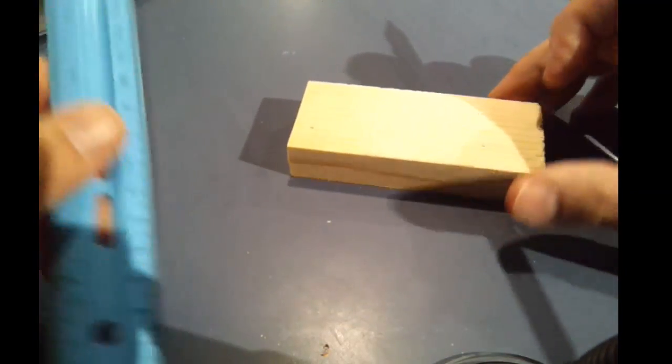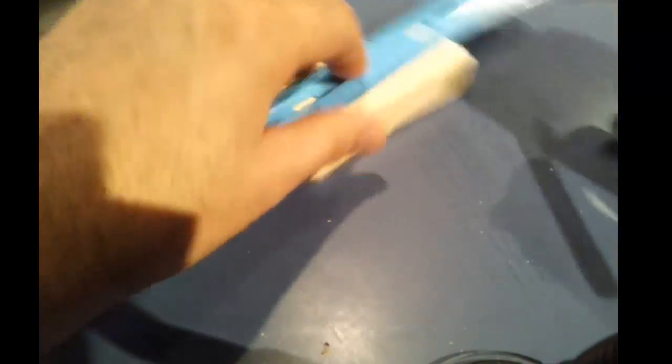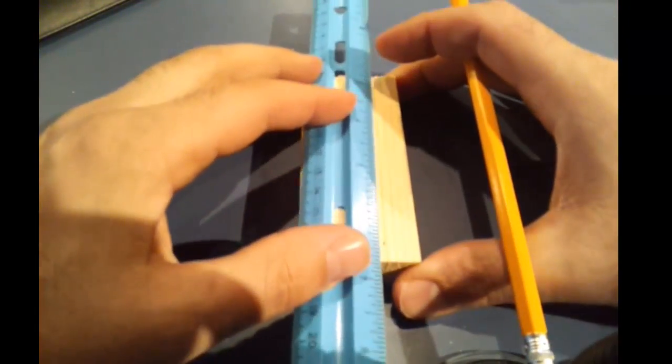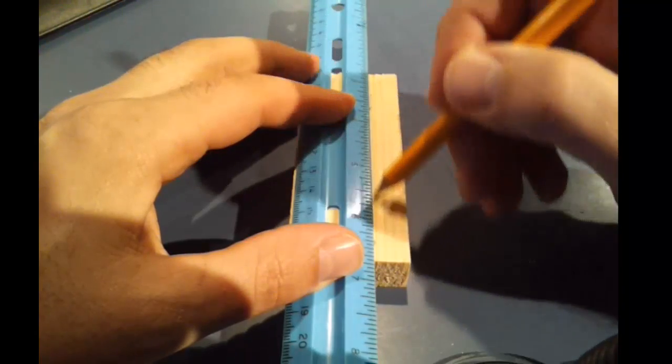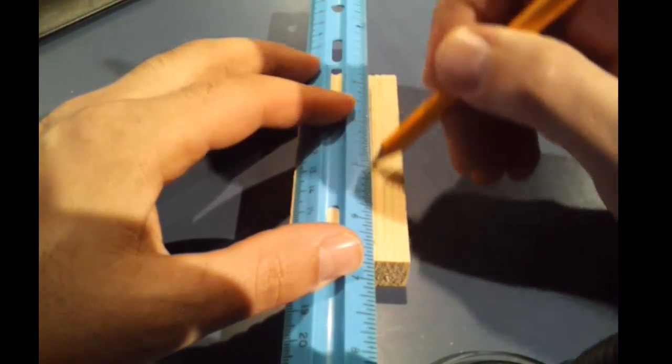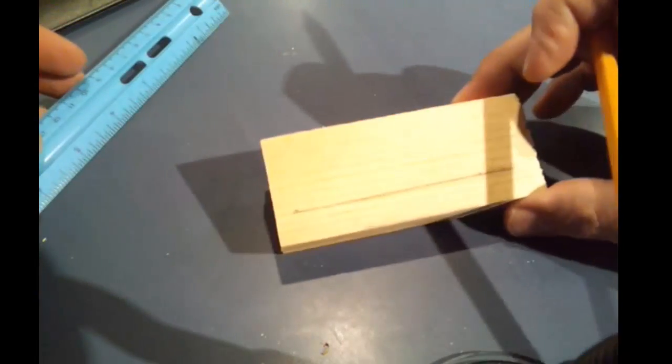Now I have two marks. I'm going to take my ruler and use it as a straight edge and draw a light line to connect those. I'm going to draw a little darker just so you guys can see it on this video.